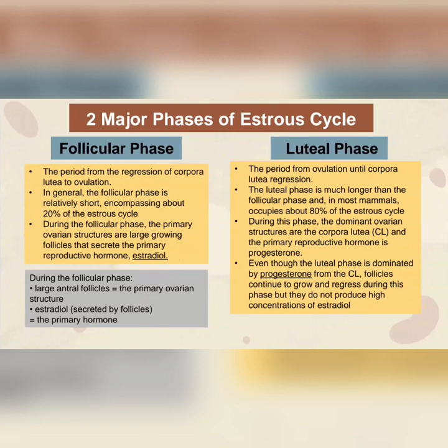Next, we have the luteal phase. This period occurs from ovulation until the regression of corpus lutea. The luteal phase is much longer than the follicular phase and in most mammals occupies about 80% of the estrous cycle. During this phase, the dominant ovarian structures are the corpus lutea, and the primary reproductive hormone is progesterone. Even though the luteal phase is dominated by progesterone from corpus lutea, follicles continue to grow and regress during this phase, but they do not produce high concentrations of estradiol.